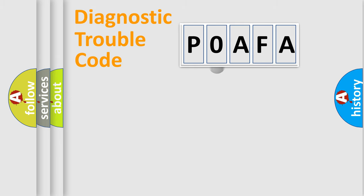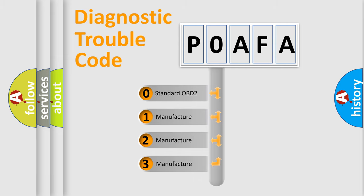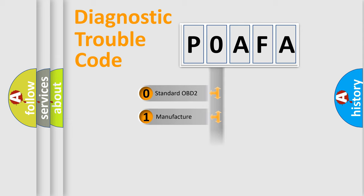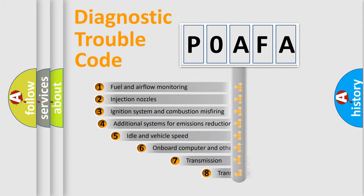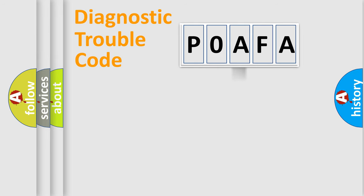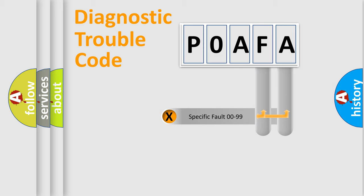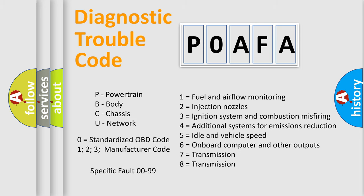This distribution is defined in the first character of the code. If the second character is expressed as zero, it is a standardized error. In the case of numbers 1, 2, or 3, it is a more specific expression of a car-specific error. The third character specifies a subset of errors. The distribution shown is valid only for the standardized DTC code. Only the last two characters define the specific fault of the group. This division is valid only if the second character code is expressed by the number zero.